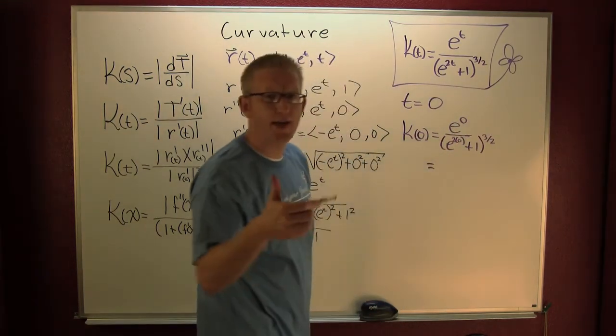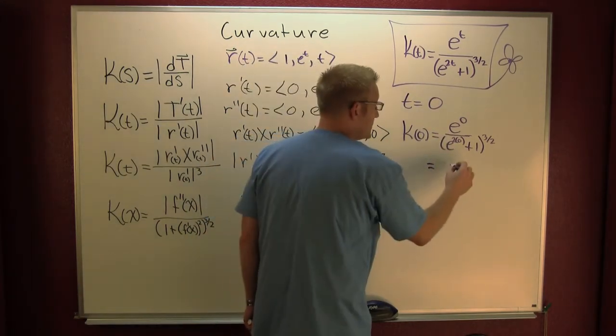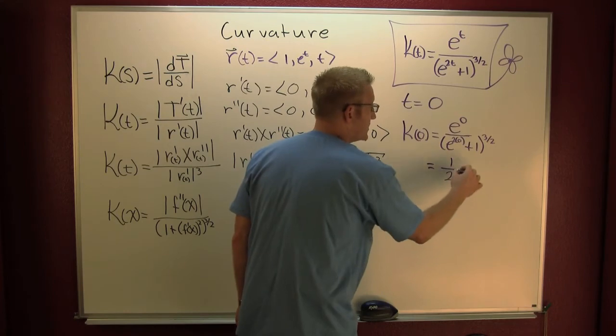So e to the zero. That's one. That's one. One and one. That's two. So what do you do? This is one over two to the three halves.